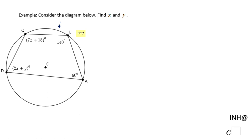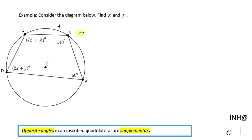Whenever you have an inscribed quadrilateral, that's what we call that quadrilateral because all the vertices of this quadrilateral are on the circumference. The opposite angles of the inscribed quadrilateral are supplementary. So basically angle Q and angle A are supplementary.